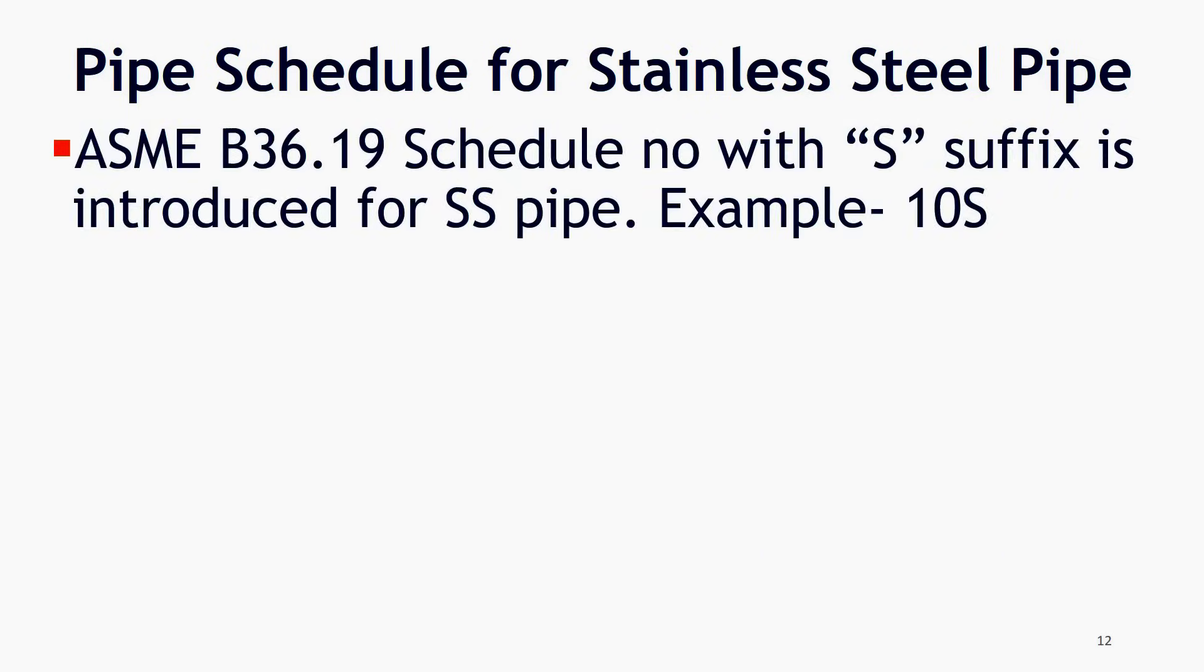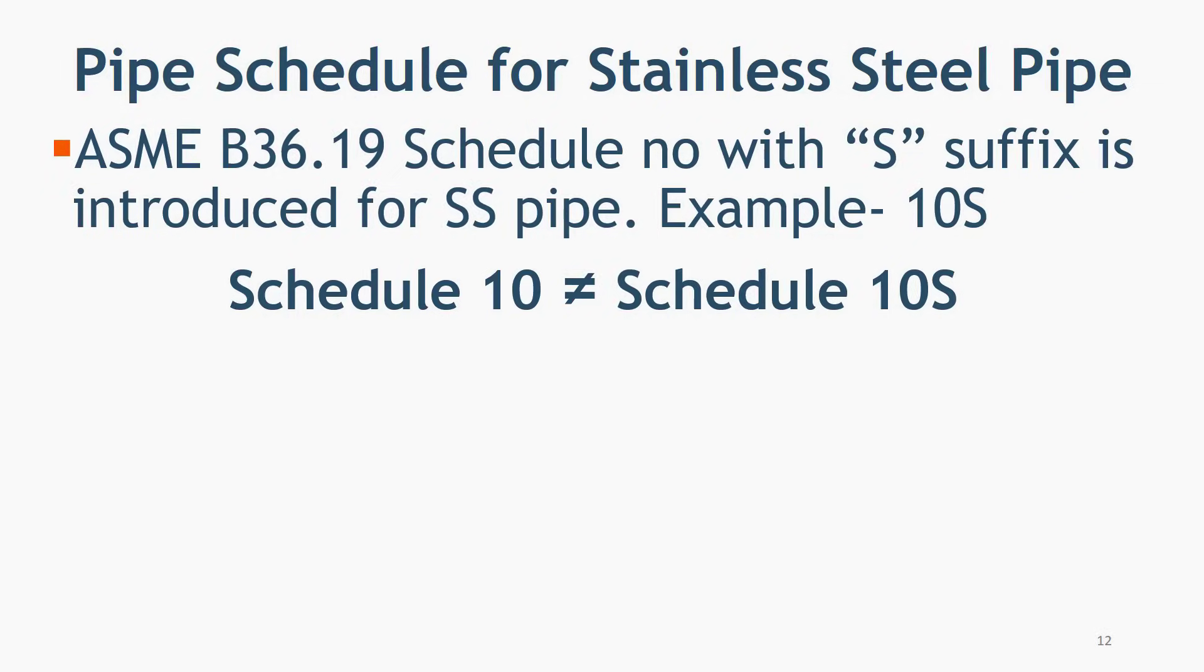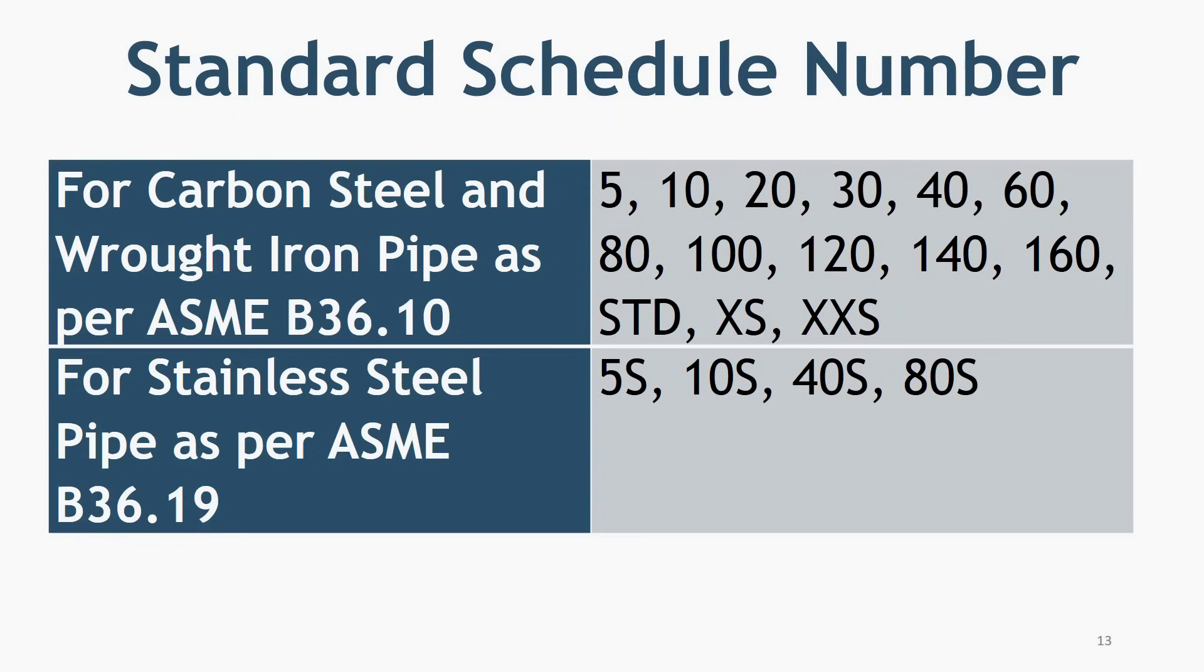Under ASME B36.19, schedule number with S suffix is introduced for SS pipe. Example is 10S, 20S, 40S and 80S. So, keep in mind that schedule 10 is not same as schedule 10S. You can see the table for the standard schedule number for carbon steel and stainless steel pipe.